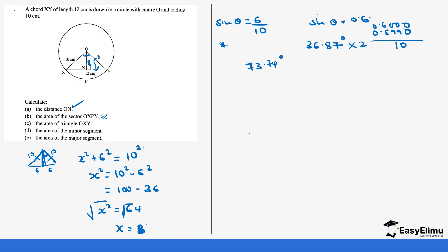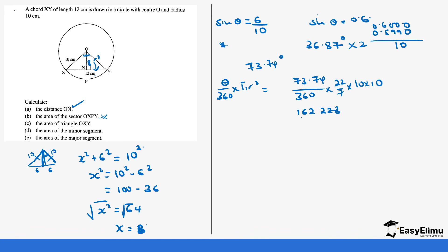Now calculate the area of the sector. The area of the sector is angle over 360 times pi r squared: 73.74 over 360 times 22 over 7 times 10 times 10. This gives 73.74 times 22 times 100 equals 162,228 divided by 2,520, which equals 64.376 centimeters squared. So we have answered the second part of the question.